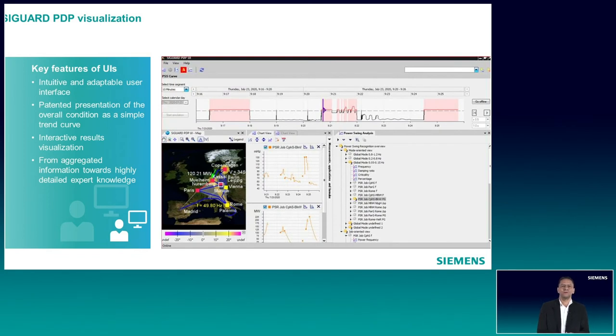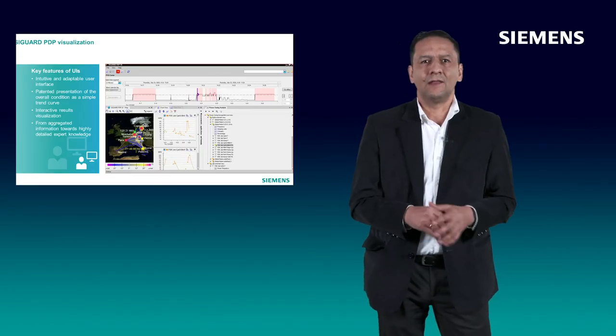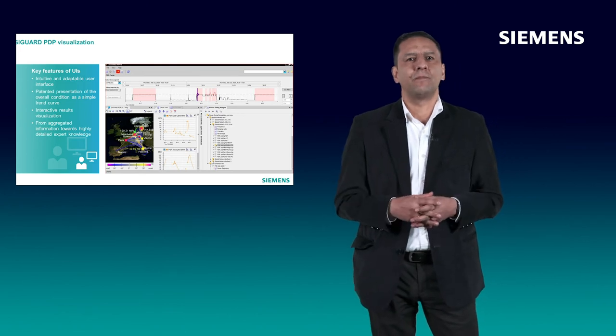In order to visualize this information, a user interface is needed. The user interface is intuitive and adaptable to user requirements. The patented representation of the overall condition of the power system as a simple trend curve can be seen at the top of the screen. Then the customer can interact with the multiple results and visualize them in a geographical view, or use the different time charts and formulas available for their respective analysis. Here on the screen, we can see the power system status curve and the geographical view with information about the angle difference between the voltage and the magnitude, and a well-condensated analysis of the power swing phenomena.